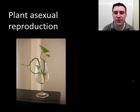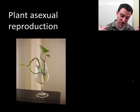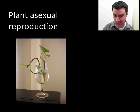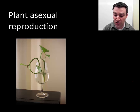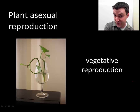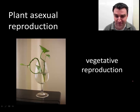Plants can also reproduce asexually. If you take enough of a chunk of a plant — like a stem or a root — and give it plenty of access to nutrients, water, and light, it can regrow all of the other structures it needs and become a clone of the original plant it was cut from. You could call this a cutting, or another term for this is vegetative reproduction — it's asexual reproduction involving a vegetative part of the plant like a root or a stem.